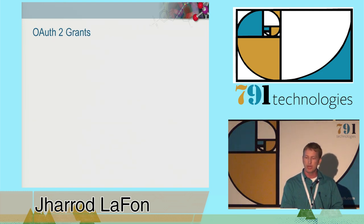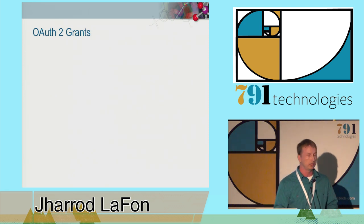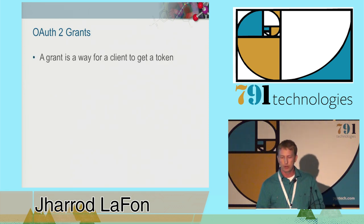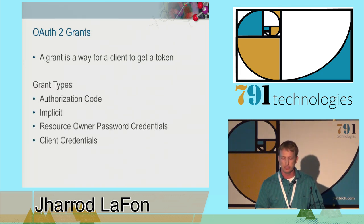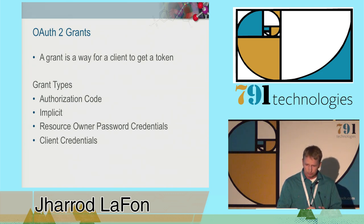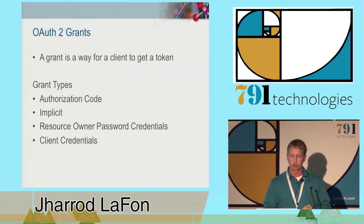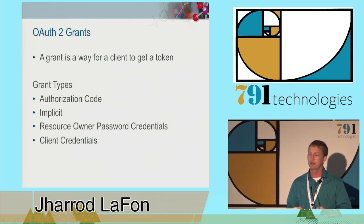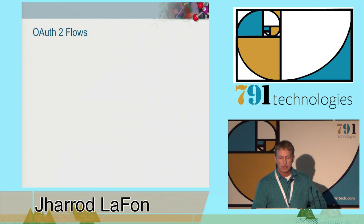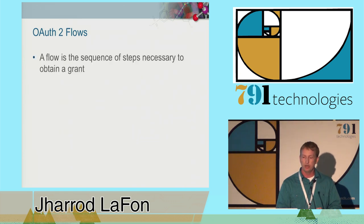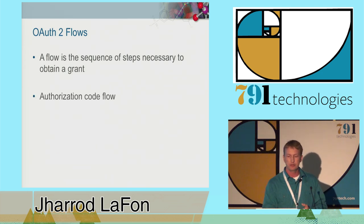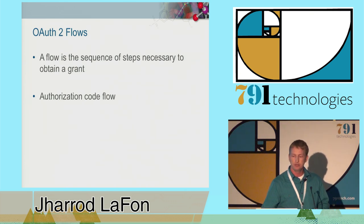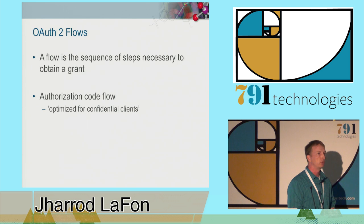OAuth 2 specifies a few ways that authorization can be granted, and those are unsurprisingly called grants. A grant is just a way for a client to get a token. There are several different grant types, but there's no need to memorize that list. Each grant has its own requirements, but they all end the same way—with a client obtaining a token. The sequence of steps required to obtain a grant is called a flow, and there's a flow for each grant type.